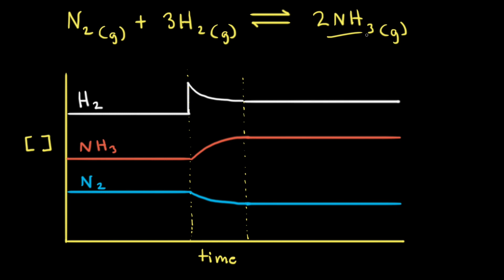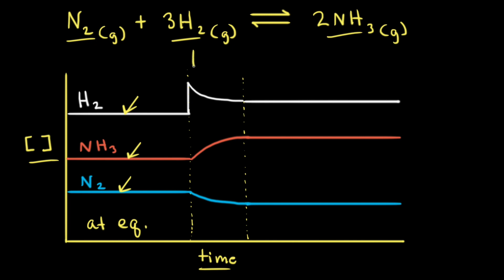Let's look at another reaction: the synthesis of ammonia from nitrogen gas and hydrogen gas. Let's say this reaction is at equilibrium and look at it on a graph of concentration versus time. At equilibrium, the concentrations of reactants and products are constant, which is why we see straight lines for the concentrations of hydrogen, ammonia, and nitrogen. Now let's introduce a stress to the system — we'll increase the concentration of hydrogen.